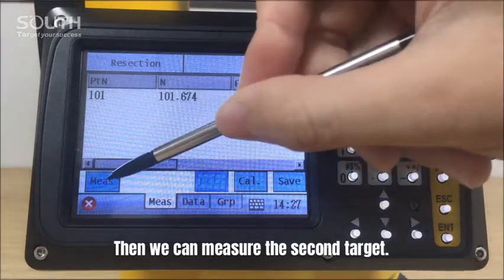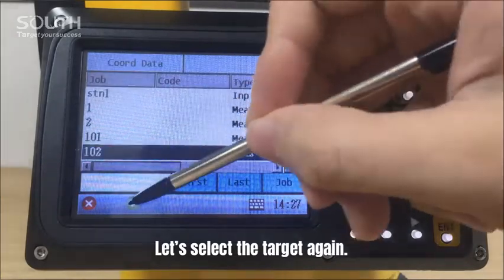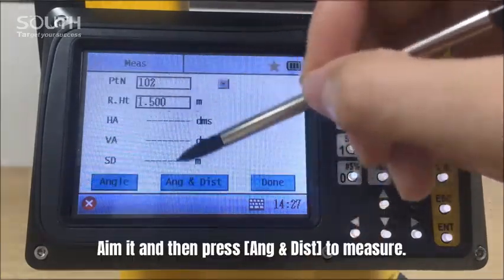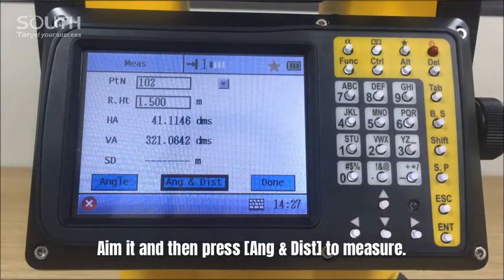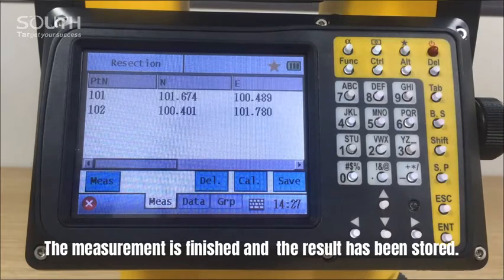And then we can measure the second target. Let's select the target again. Enter the target height. Aim it and then press Angle and Distance to measure. Then measurement is finished and the result has been stored.